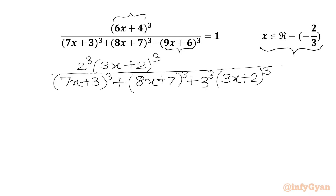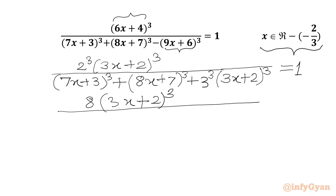The RHS is 1. Now 2 cubed is 8, 3 cubed is 27. So I will write 8 times (3x plus 2) whole cube over (7x plus 3) whole cube, plus (8x plus 7) whole cube.